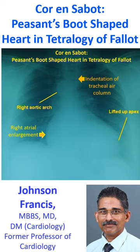The lung fields are oligemic due to the right ventricular outflow tract obstruction in Tetralogy of Fallot. Tetralogy of Fallot is the commonest cause of right aortic arch in an adult.